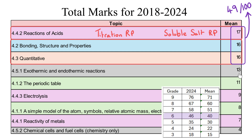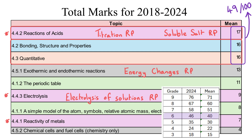Beyond that, in fourth place we have exothermic and endothermic reactions, where we find our third required practical, and then the fourth required practical comes in as electrolysis of solutions. In terms of which topics carry the most marks, those three sections of Topic 4 together make up a third of all the marks available on Paper 1 on average.